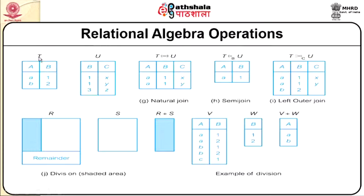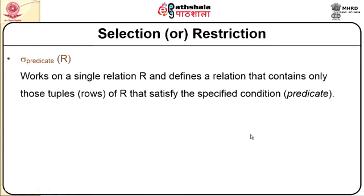If we introduce two relations T and U with attributes A, B for T and B, C for U, and perform a natural join, it will map the common attribute B, combining A and C records. There is also a semi-join, left outer join, and a division operator, which we will look at one by one.